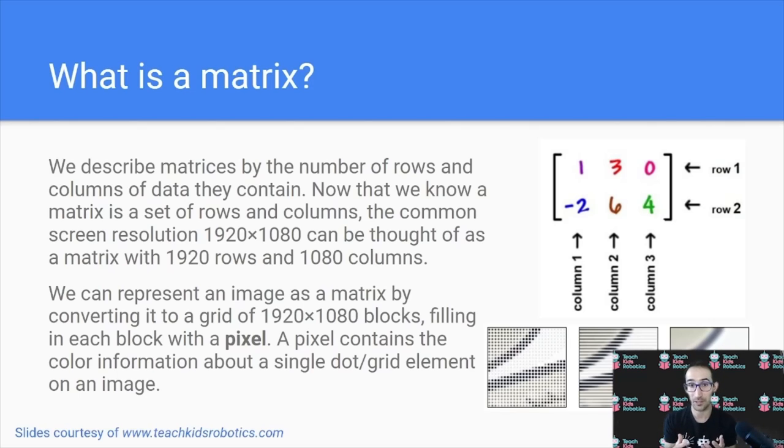Now, a pixel is the term for the individual dot in the image, and this contains information about color that helps us build up the original image.